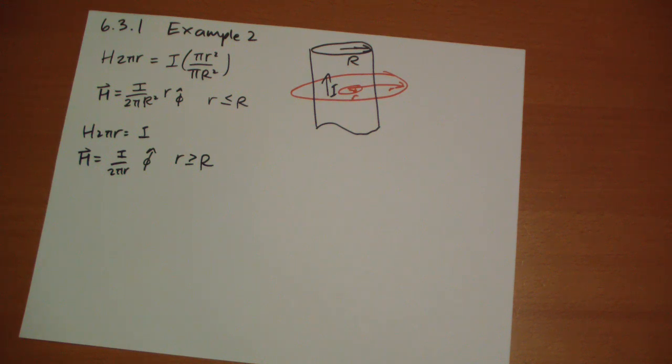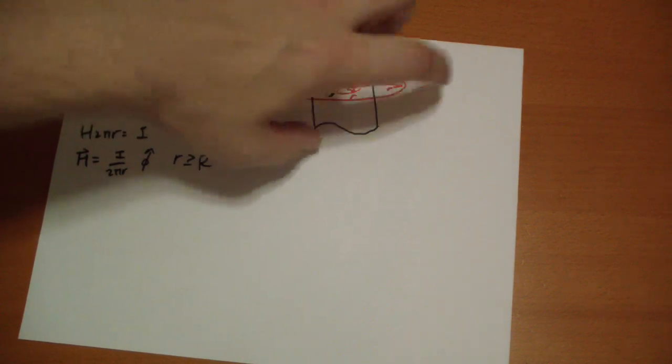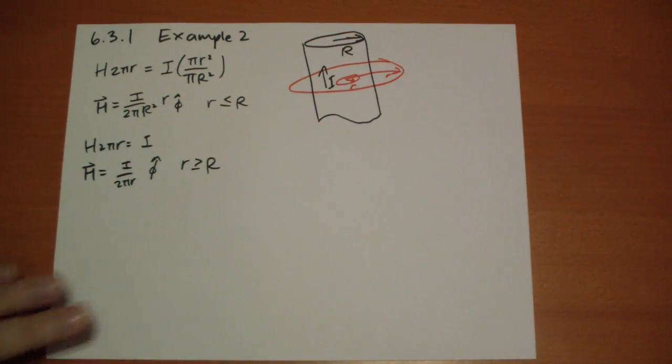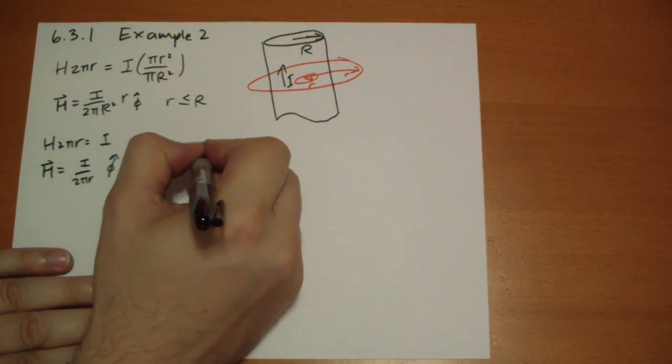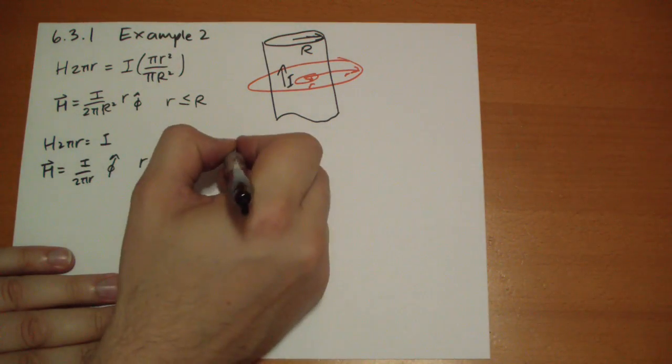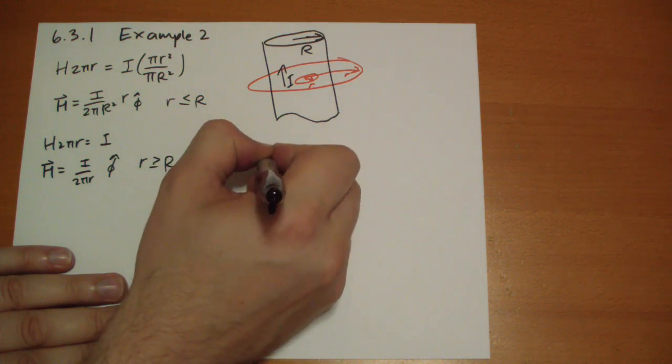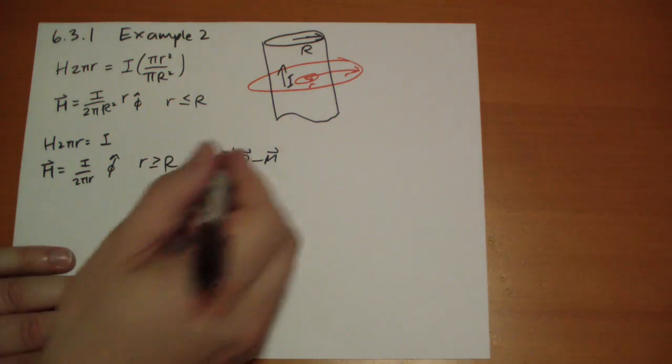Now outside, we know that the magnetization outside here, because there's no matter to magnetize, so the magnetization must be equal to 0. So we have H vector is equal to 1 over mu naught B vector, minus M vector, well, M vector is 0.